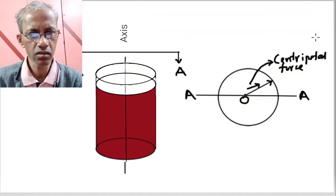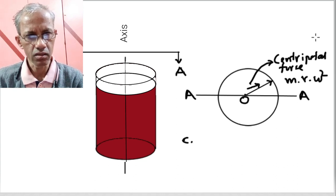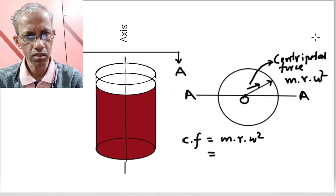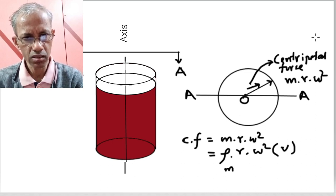The magnitude of the centrifugal force is CF = m·r·ω², where m is the mass, r is the radius, and ω is the angular velocity. This is the same as the density of the individual phases multiplied by the volume of the individual contents, since mass m equals density times volume.